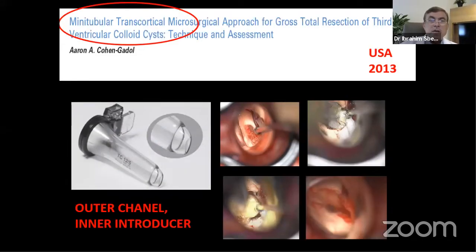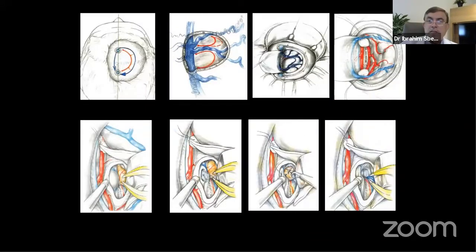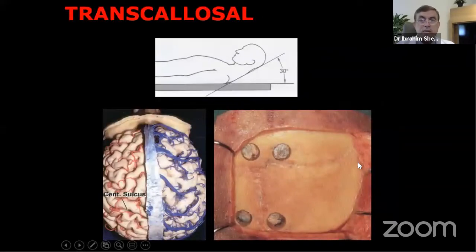The transcallosal approach involves going through the midline. The dura is cut on either side of a bridging vein to keep it intact, then arachnoid dissection provides the interhemispheric space. After identifying the pericallosal artery, the corpus callosum is split approximately 1.5 centimeters to enter the ventricular system.